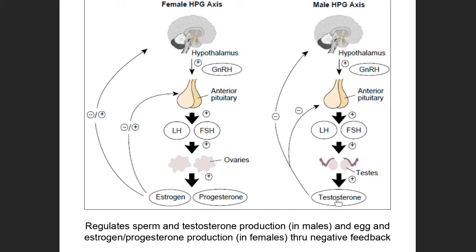Built into this system is a mechanism to prevent testosterone levels from becoming too high. If there were only positive feedback, GnRH would be released constantly, driving continuous LH and FSH release and constant high testosterone production — which could be problematic. So the HPG axis includes a negative feedback system: as testosterone levels build up in the blood, testosterone feeds back negatively on the anterior pituitary.